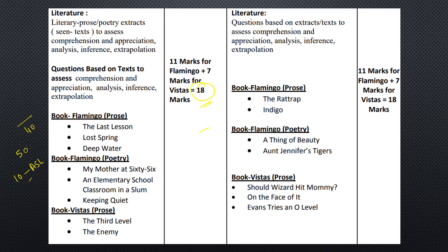Now in literature, you will be having some RTCs — that means Reference to Context — comprehensions, and passages based on literary parts, that means prose and poetry. Also in the prose section from Flamingo, you have three chapters in the first term, three poems from Flamingo, and two lessons from Vistas.